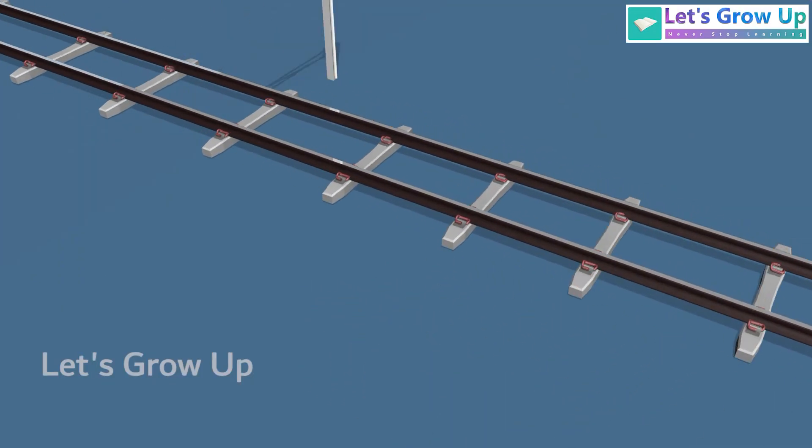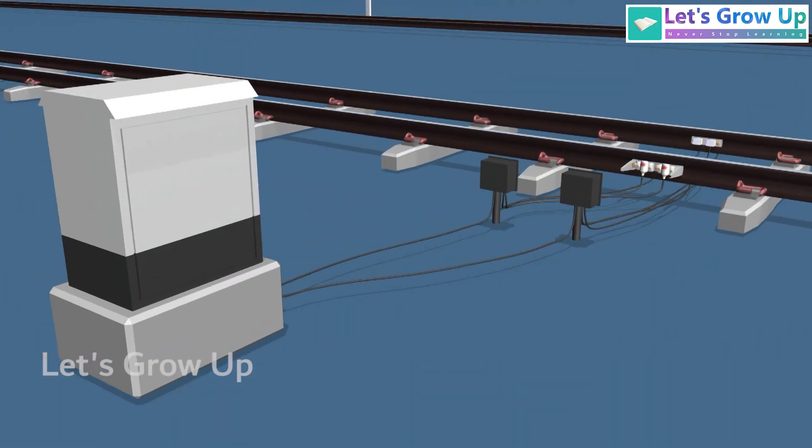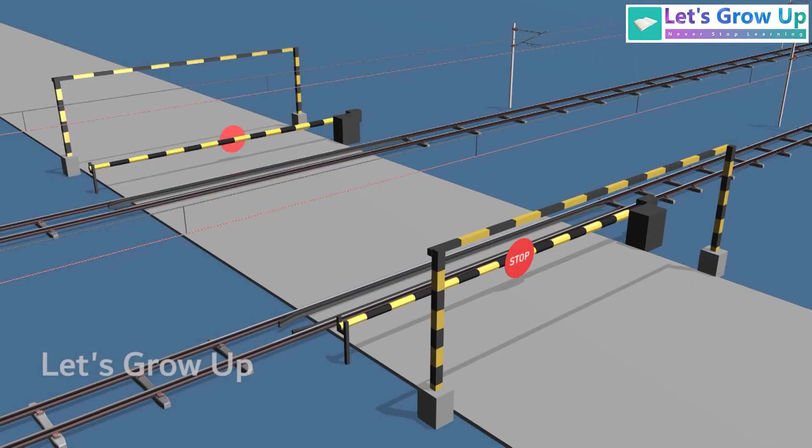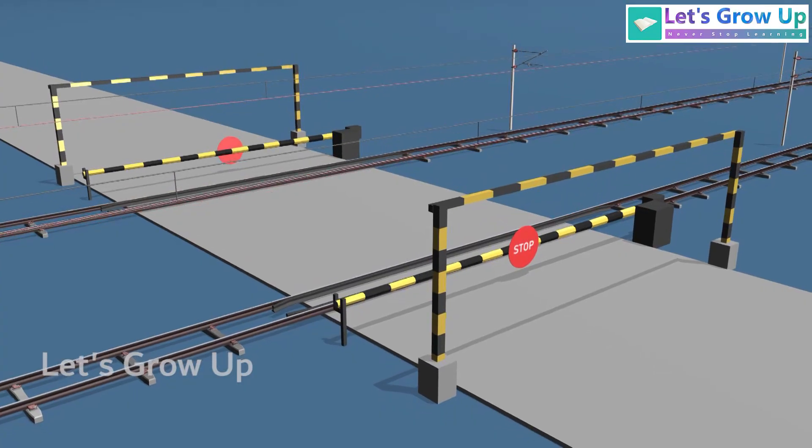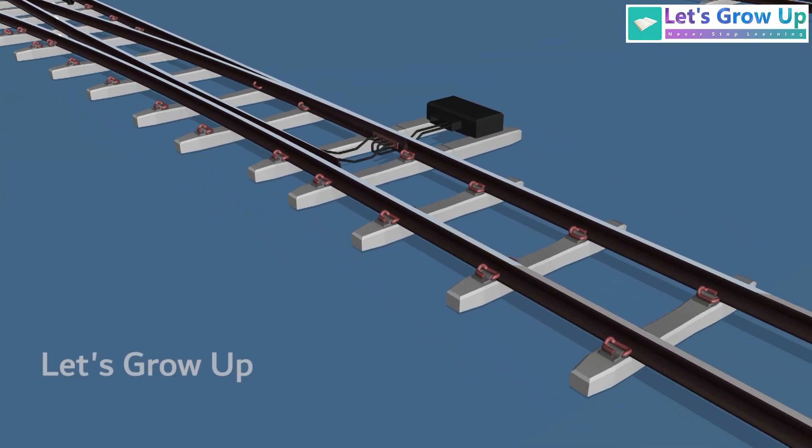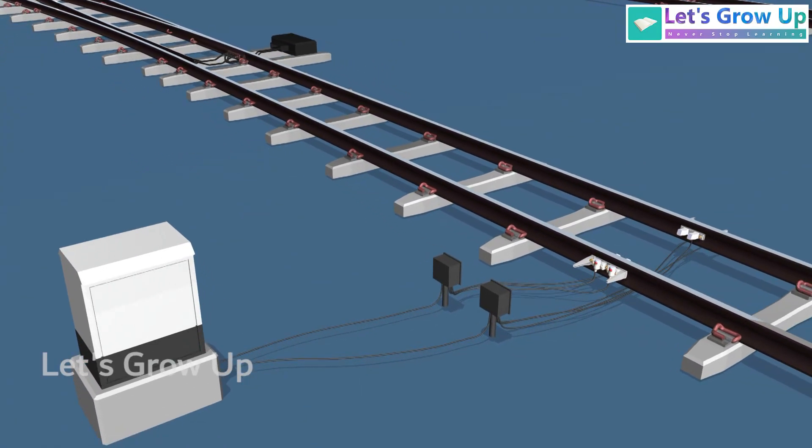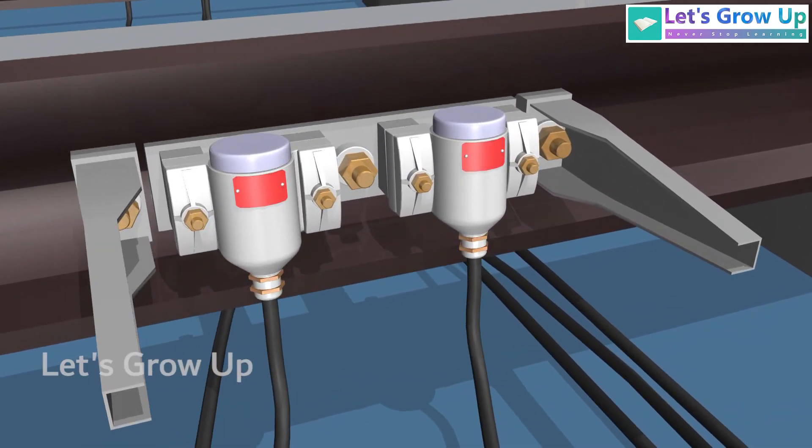Commonly, it is often installed at the entry and exit points of block sections, near level crossings, and before switch points. This device is secured to the base of the rail using nuts and bolts.